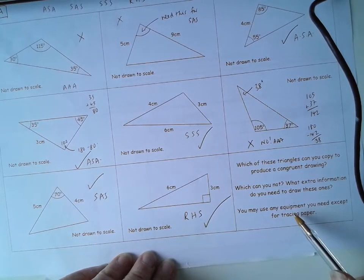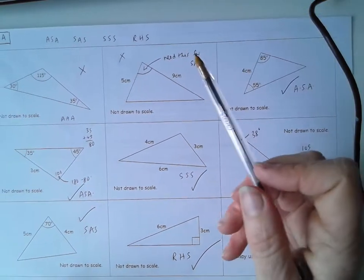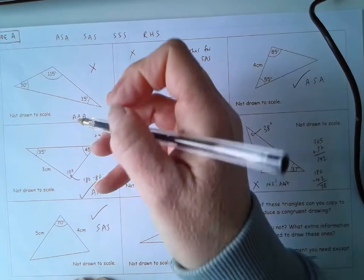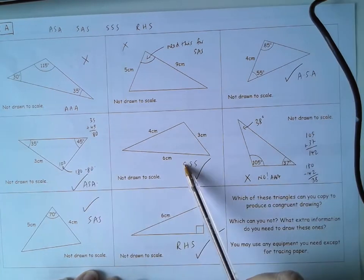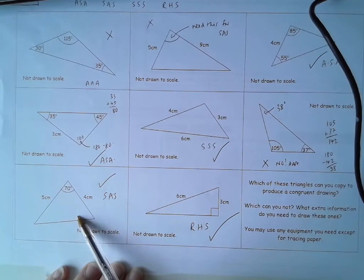So what extra information would we need? Which is the second part? We'd need nothing for this one. We'd need an angle for this one. We'd need one side for this one here. We'd need a missing side. Here we can do it anyway. Here we can do it anyway. Here we need a side again. Here is fine and here is fine.